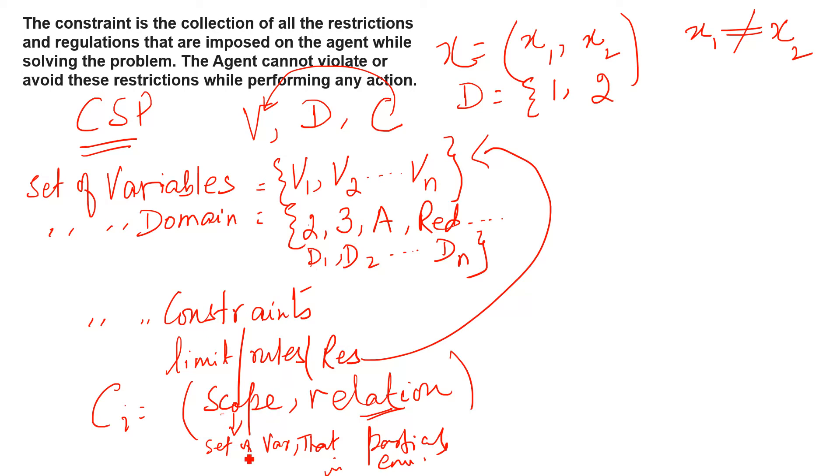You will see scope means set of variables that participate in the constraint. Relation means defines the value that variables have. Suppose this is how we will write down our constraint according to scope. I am using these two variables, x1 and x2. And what is the relation between these two variables? x1 cannot be equal to x2. This is my first constraint.